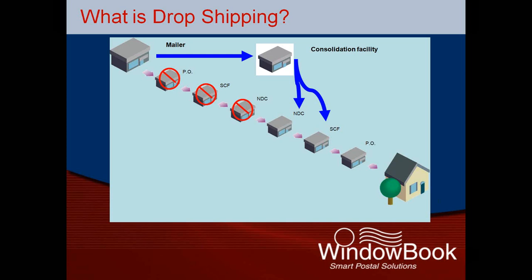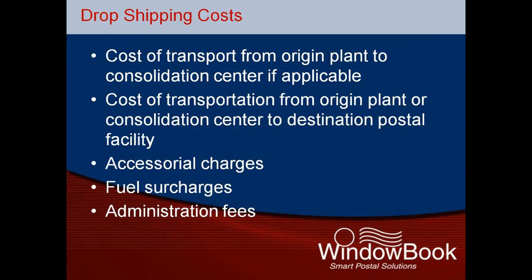Bypassing these steps saves money for the postal service, which they share with mailers in the form of dropship and zone skipping discounts. Mailers may transport the mail themselves or contract with a third-party consolidator or logistics provider to transport the mail.